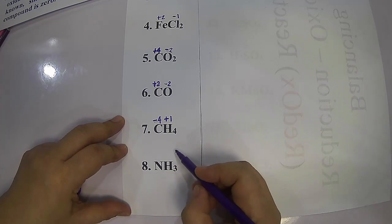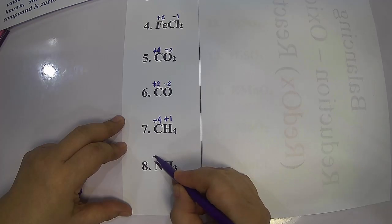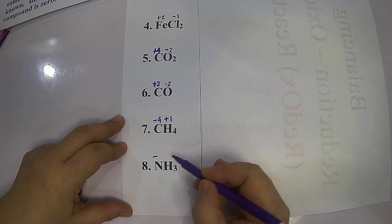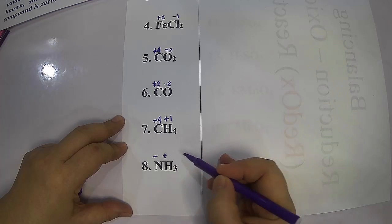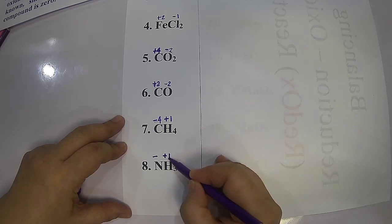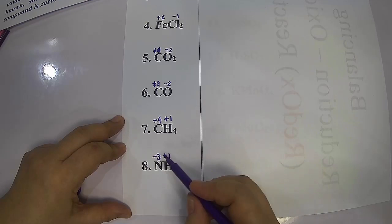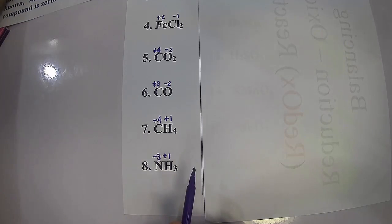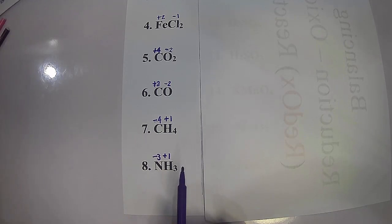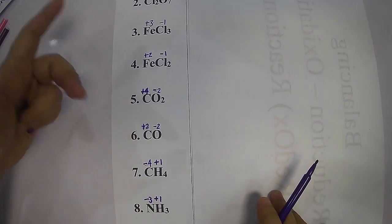For ammonia (NH₃), nitrogen is more electronegative than hydrogen, so we assign a negative sign to nitrogen and positive one to hydrogen (family 1A). Therefore, nitrogen is negative three. Negative three plus positive three equals zero. For binary compounds, you can simply apply the reverse of the crisscross method.